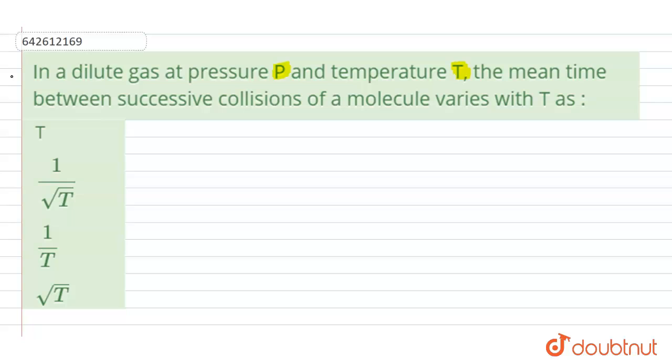So in this question I have to find out the mean time between successive collision. Now we know the formula to find out the mean time between two successive collisions, which we can denote by tau mean, that will be equal to mean distance upon velocity.